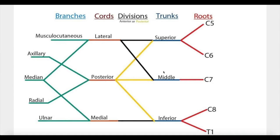One of the areas where the spinal nerves form a network of nerves is the brachial area — specifically the spinal nerves from C5 to T1. These spinal nerves that arise from C5 to T1 will form a network, and this network is called the brachial plexus. To make things easier, this brachial plexus is composed of parts.